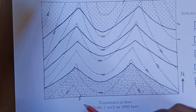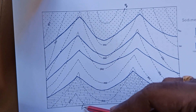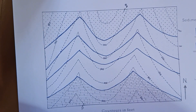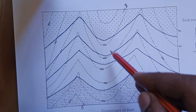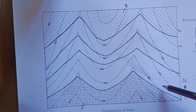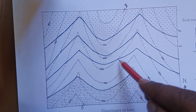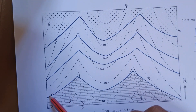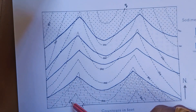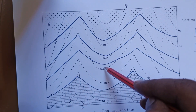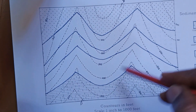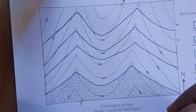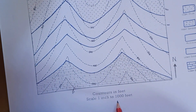In this given map, P and Q are the two points along which we have to draw the cross-section. This is a contour map and the geological formations or outcrops are mapped and drawn. The contours are 200, 300, 400, 500, 600, 700, 800 — so the contour interval is 100 feet.